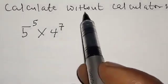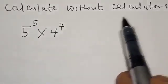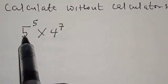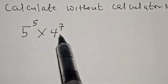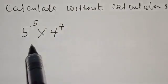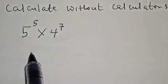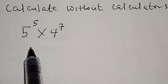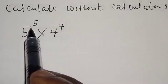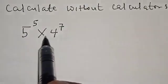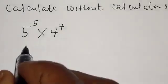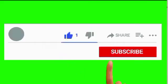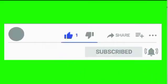Calculate without calculators: 5 raised to power 5 multiplied by 4 raised to power 7. Hi everyone, welcome to my class. In this class we want to look at how we can calculate 5 raised to power 5 multiplied by 4 raised to power 7 without using a calculator. But before we proceed, please don't forget to like, share, comment and subscribe.